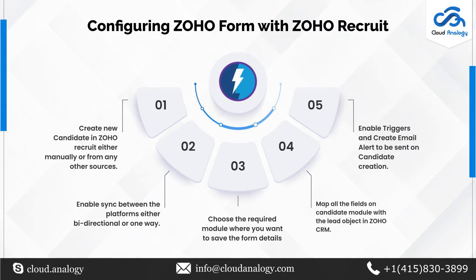Third, we need to choose the required module where we want to store all the candidate information. In this project we have selected the lead module, so we will create a new lead whenever a candidate gets created. Next, we need to map all the fields on the candidate module with the required fields on leads, such as last name, first name, email, company, and more. We have also set the lead source as 'portal' by default.